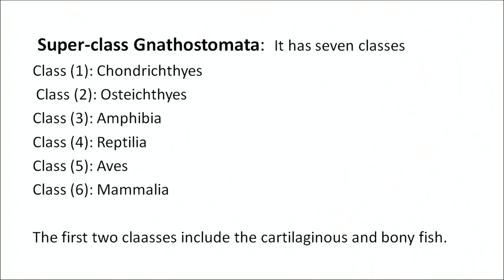Superclass Gnathostomata is further divided into six classes: first, Chondrichthyes; second, Osteichthyes; third, Amphibia; fourth, Reptilia; fifth, Aves; and sixth, Mammalia. The first two classes — Chondrichthyes and Osteichthyes — include the fish. Fish are aquatic, gill-breathing animals that move with the help of fins and are covered with scales.